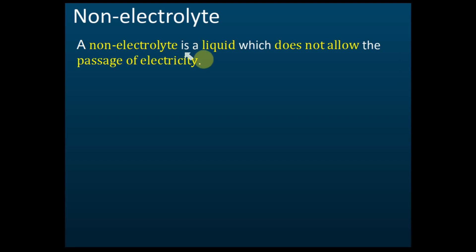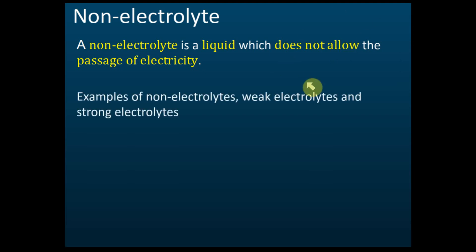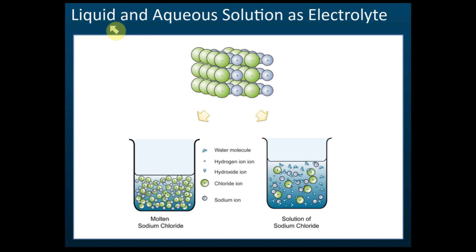A non-electrolyte is a liquid which does not allow the passage of electricity, meaning that liquid cannot conduct electricity. Now let's look at this diagram, which explains why a liquid and aqueous solutions of an ionic compound can act as an electrolyte.